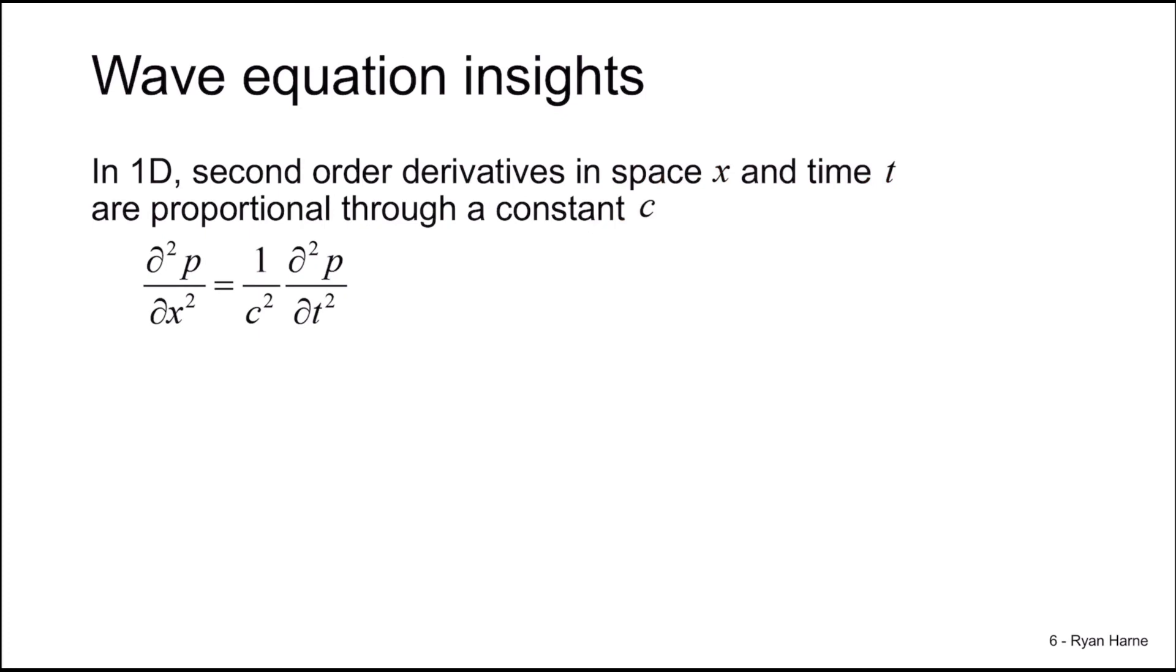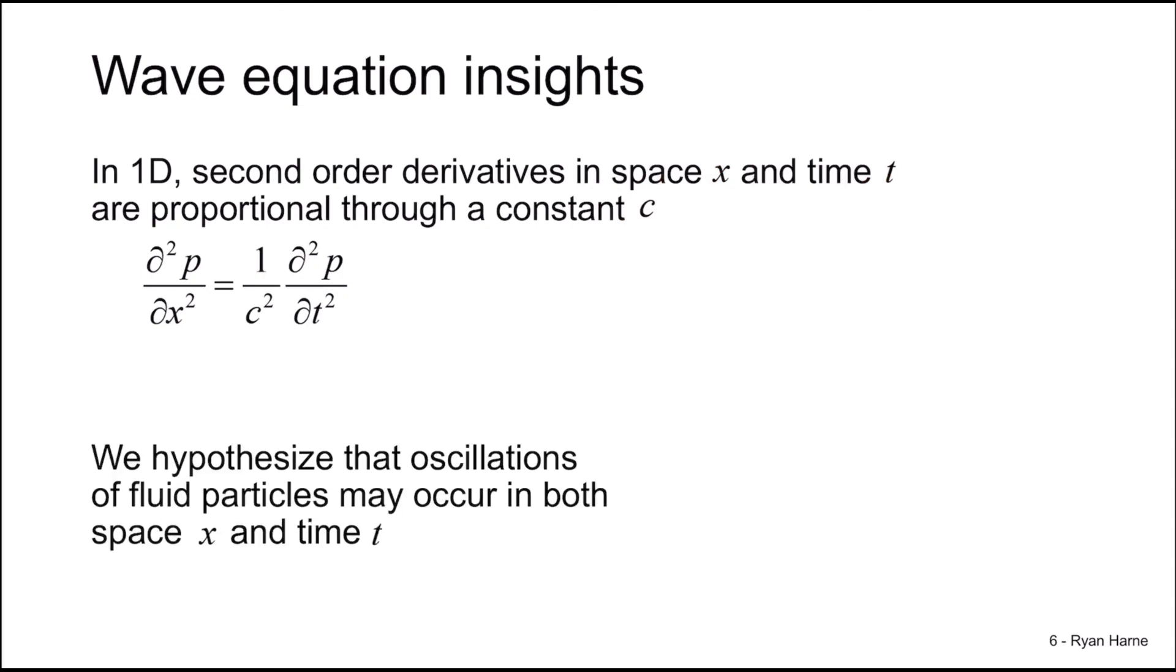In one dimension, the simpler case, we have second order derivatives in space and time. And these are related or proportional through a constant c. So if we do have some exchange of oscillations between space and time, what might that look like? It's reasonable to hypothesize that oscillations occur in both space and time.